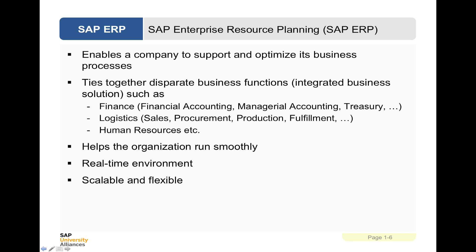SAP Enterprise Resource Planning, or ERP, enables a company to support and optimize its business processes. It ties together business functions through a process-centric orientation — the process is the key thing, and departments such as finance, logistics, and human resources support those processes as they flow through. This helps the organization run smoothly, provides a real-time environment — becoming even more real-time with in-memory database processing — and it's scalable and flexible.